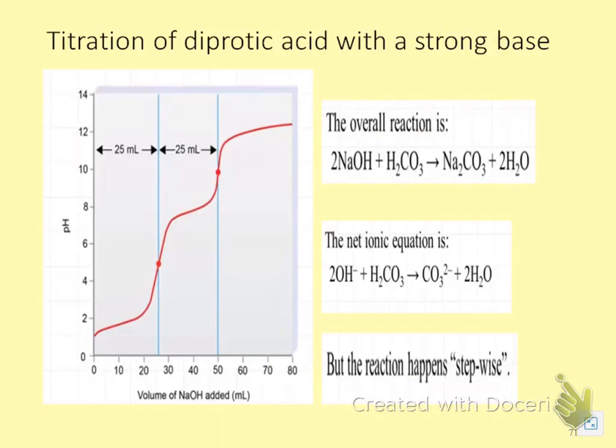So let's take a look. If I have a titration with a diprotic acid, I end up with two equivalence points. That's because if I just look at the overall reaction, and let's take carbonic acid which is diprotic.